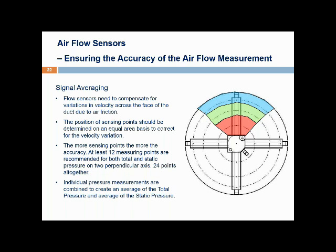To get accurate airflow measurements, it is important that the flow sensor measures the true averages of both total and static pressure, compensating for variations in velocity across the duct. Friction between air and the duct wall reduces air velocity closer to the wall, so the velocity profile varies across the duct. Sensing point positioning is very important — they should be positioned on an equal area basis to compensate for velocity variation. At least 12 measuring points are recommended for both total and static pressure on two perpendicular axes — making 24 measuring points in total. The individual measurements should be combined to create an average of overall total pressure and overall static pressure, yielding an accurate average velocity pressure and airflow rate.